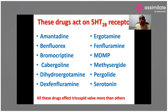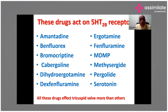The most common valve involved in drug-induced valvulopathy is the tricuspid valve, but the mitral valve is also involved. On echocardiography, the morphology resembles rheumatic mitral stenosis, but importantly, once the drug is discontinued, the valve morphology normalizes over the next few months.